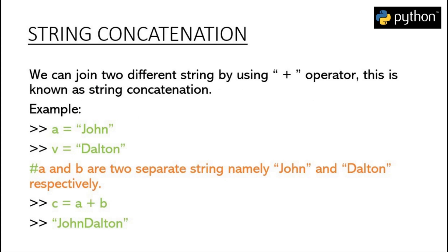Strings are basically used to represent a text value in Python, and anything included within quotation marks is considered a string whether it is a numerical value or any special character. There are some operations that can be performed on strings. For example, if we want to add two strings — namely 'John' and 'Delton' stored in variables a and b respectively — we can join them using string concatenation, which uses the same operator as addition in mathematics.